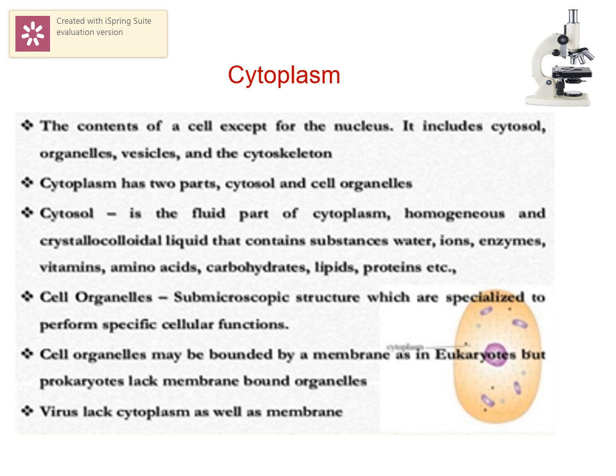The nucleus is the control center of the cell. It controls cell metabolism and cell activities. It contains all genetic information and helps in transfer of characters from parents to offspring. Division of the nucleus is essential for cell division. All the contents of a cell except for the nucleus are called cytoplasm, which has two parts: cytosol and cell organelles. The fluid part is the cytosol, and specific membrane-bound structures are the cell organelles — meaning tiny organs — which perform specific functions. In prokaryotes, these membrane-bound organelles are absent.